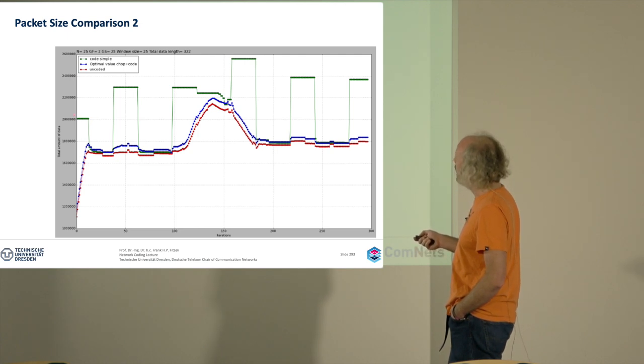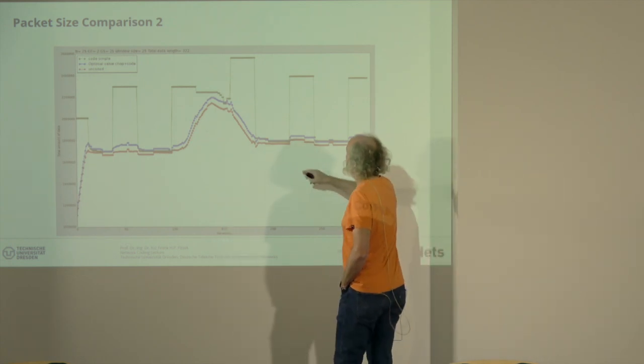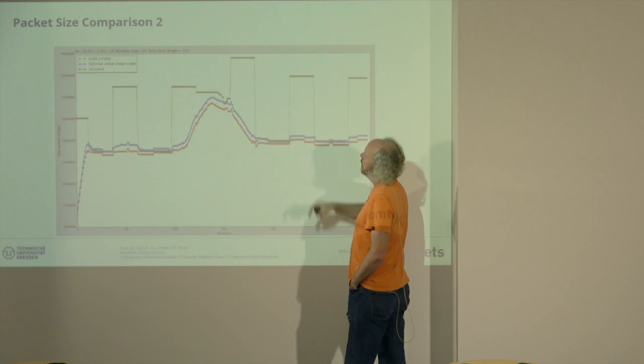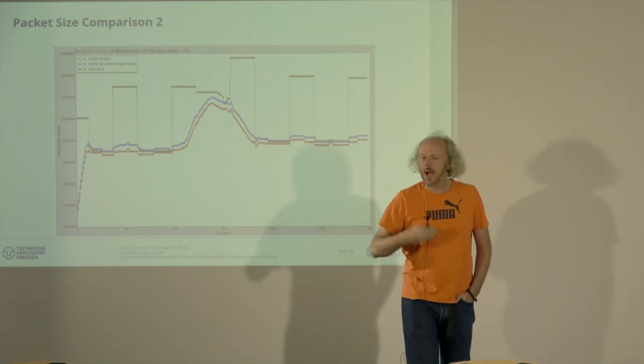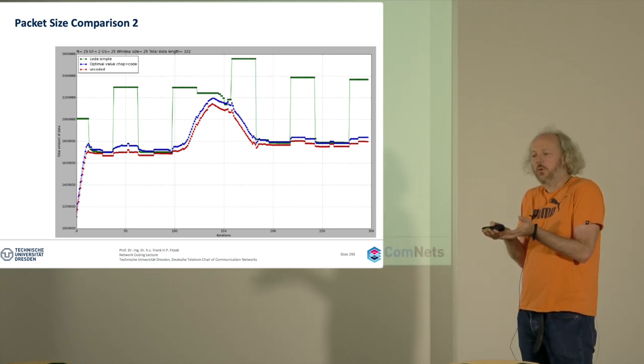It's always then the maximum here, and if you have the optimal value chop and code, that's the blue one, and uncoded is then the red one, which is the lower bound. With the blue one we are quite close to it, so this is a way how we adapt over time to that.